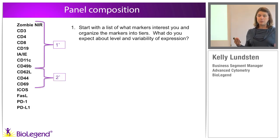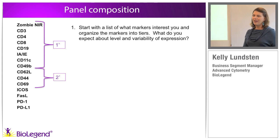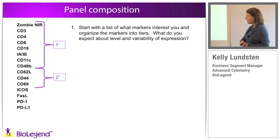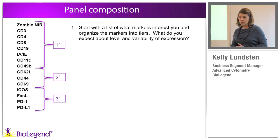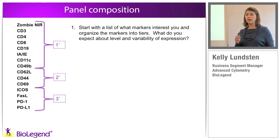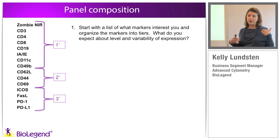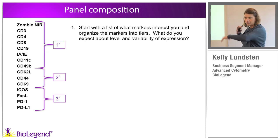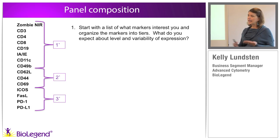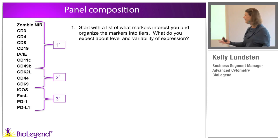Versus expression markers or activation markers where your range of expression is very variable — we call those dynamic range expressors, your secondary tier. These are molecules where the population won't just pop off the negative; you'll have to work to resolve them well. Then your tertiary tier are molecules where you don't have a complete understanding of what expression to expect — your anomalies or unknowns.